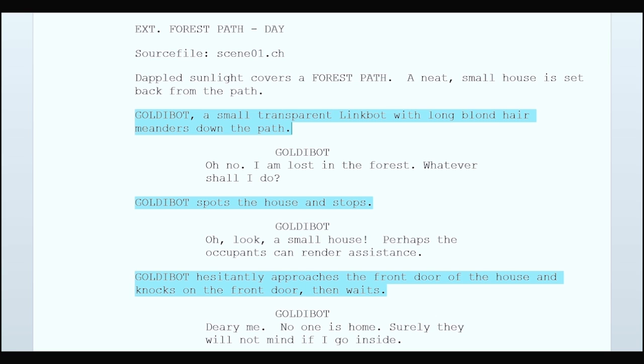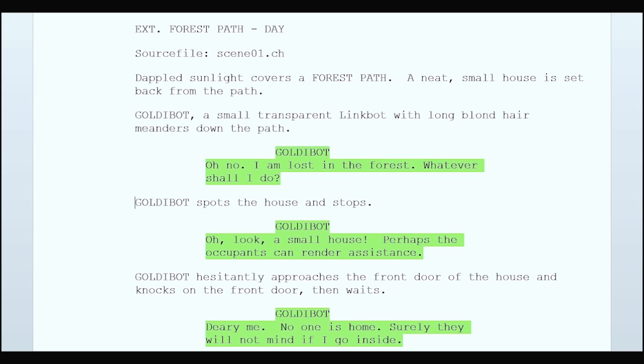The next required element is stage direction. Stage direction briefly describes how the robot or actors will move in the scene. These are the directions that your code will actually implement. The final element is dialogue. Anything which is said by the actors or narrator should be included in your dialogue.